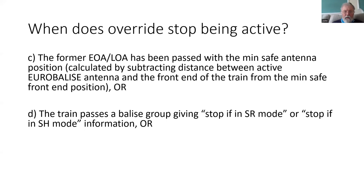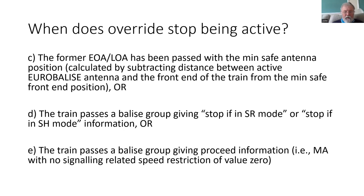Obviously if we actually read a Balise group transmitting stop if in SR, or stop if in SH, or danger for shunting information, then we want the override facility to be cancelled. That does mean one needs to be careful not to put a danger for shunting Balise group message on the approach to an end of authority, because the driver might stop before that Balise group, select override, and the override will be cancelled earlier than expected.